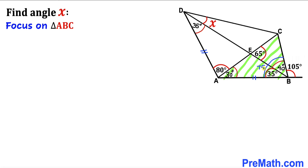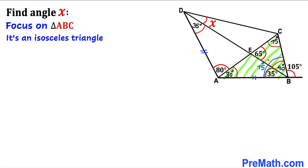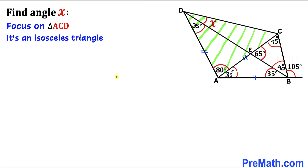Now let's focus on triangle ABC. The whole angle at A is 75 degrees. Recalling the triangle sum theorem, if this angle is 75 degrees and this angle is 30 degrees, then this third angle must also be 75 degrees. Since these two angles are congruent, triangle ABC is an isosceles triangle, so the opposite side lengths AB and AC are congruent as well.